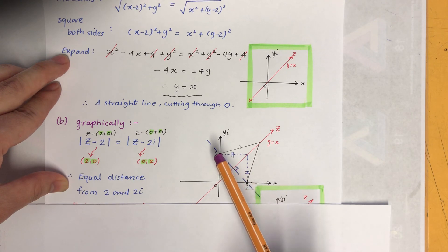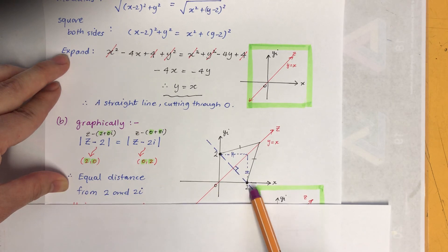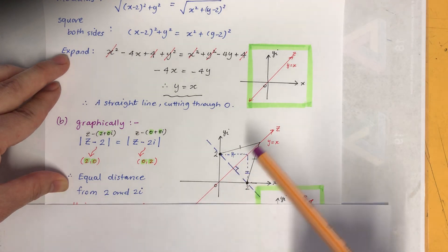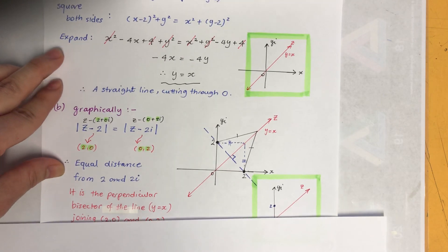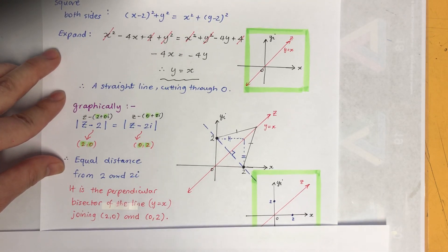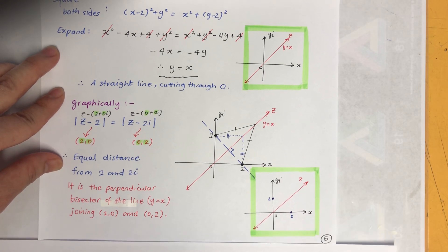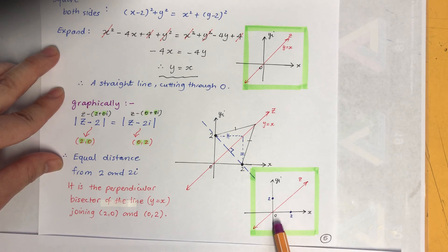So if I put 2, 2,0 and 0,2 there, and it's equal distance from 2 and 2i, to get the equal distance you need to go through the middle parts of it, which is Y equals X. And also we can say it is the perpendicular bisector of the line joining 2,0 and 0,2. So my final graph will look like this.